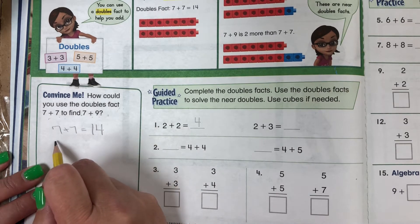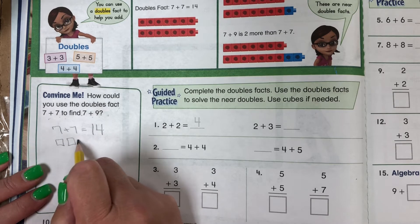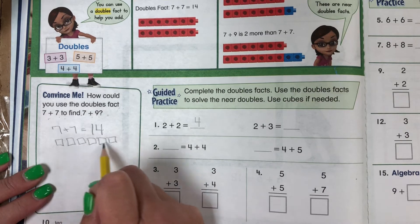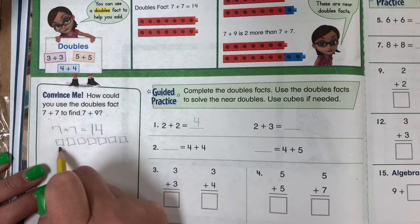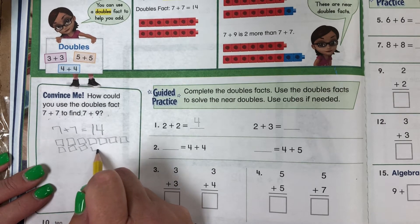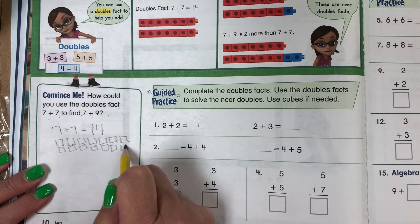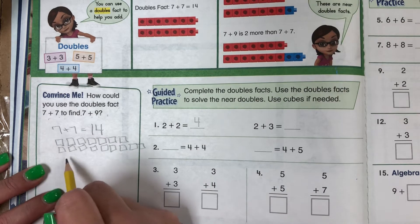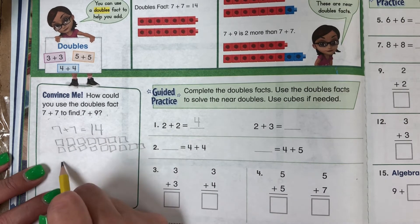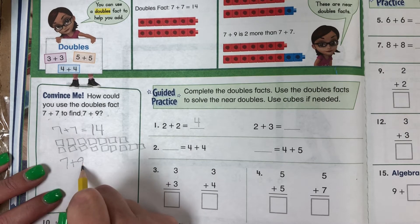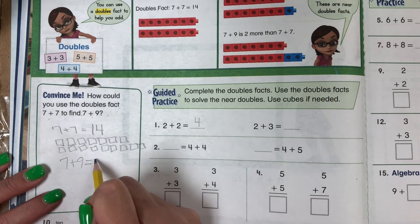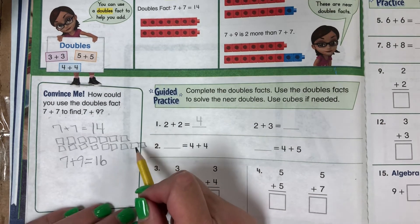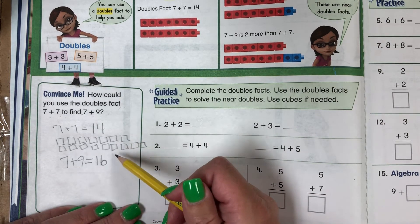If you have 7 plus 9, that means you have 7 plus 7 plus 2 more for 9. So 7 plus 9 is 14 plus 2 more, which would be 16. That's how I know 7 plus 9 is 16.